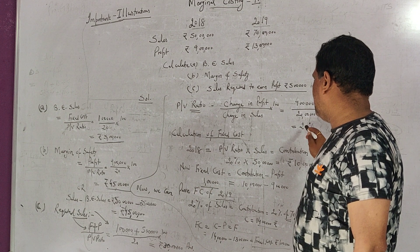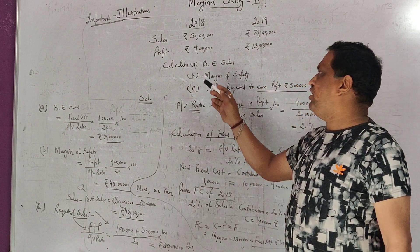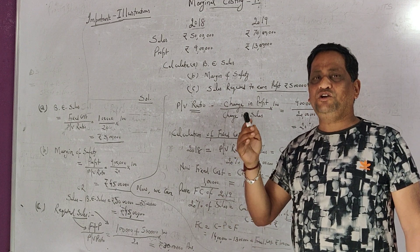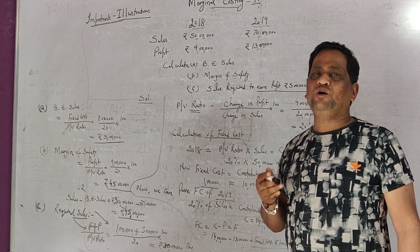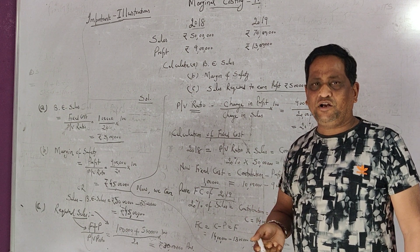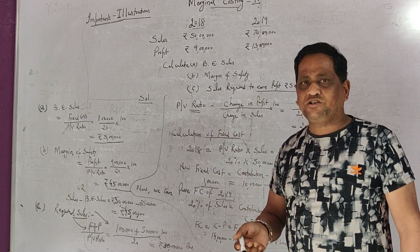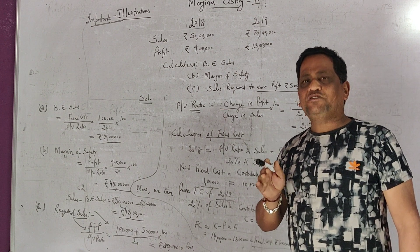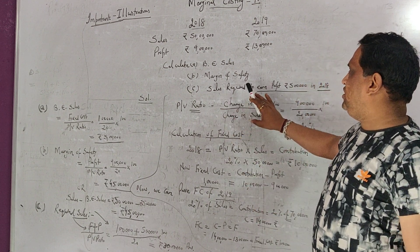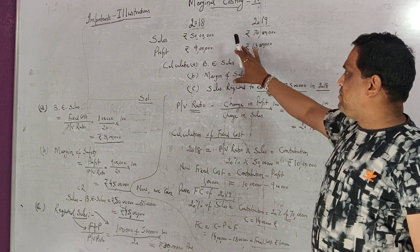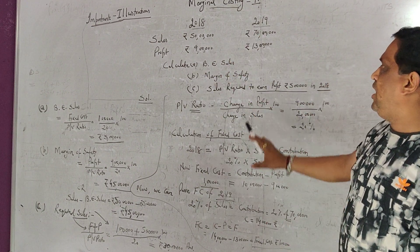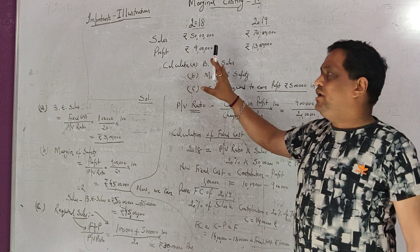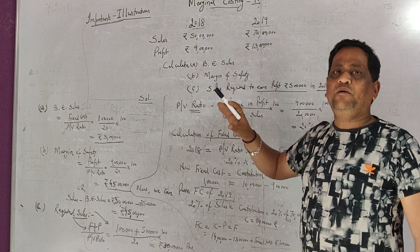Any firm with this type of information gives a PV ratio of 20%. Even if the examiner has not asked for PV ratio calculation explicitly, if it is silent, we should calculate it ourselves first. Before calculating break-even sale or margin of safety, we must always first calculate the profit volume ratio.